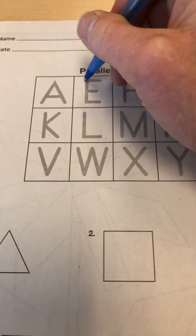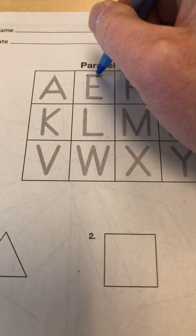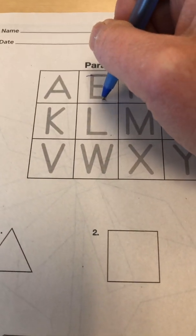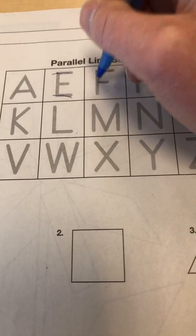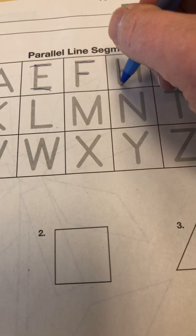So let's go back over here and parallel line segments. We know that the E is parallel, the F, the two horizontal lines, the H is,